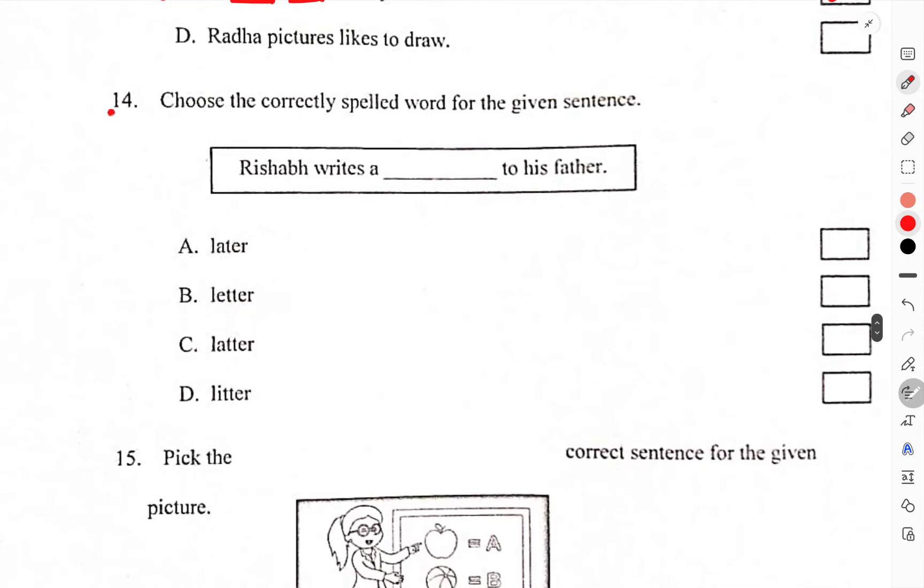Choose the correctly spelled word from the given sentence. Radha writes a letter to his father. L-E-T-T-E-R. B is the correct.